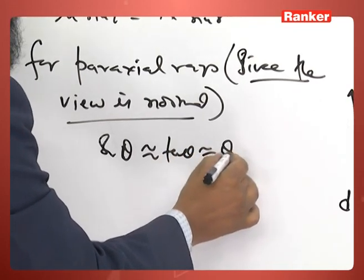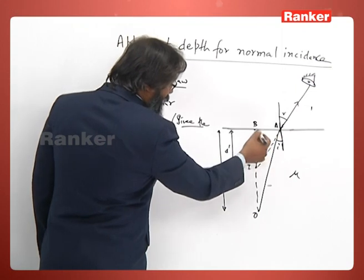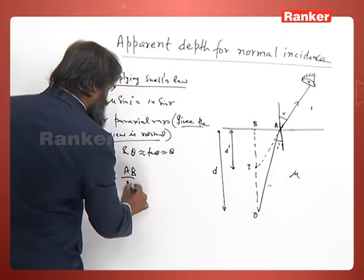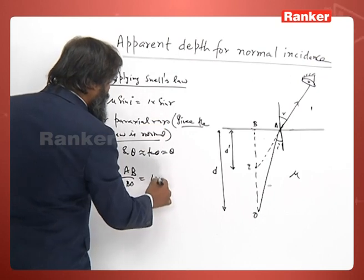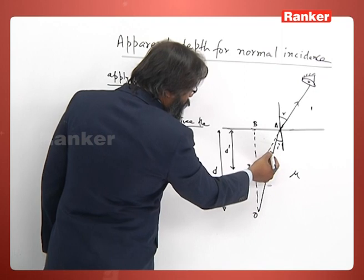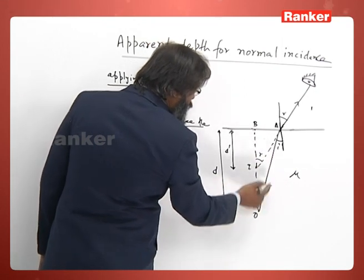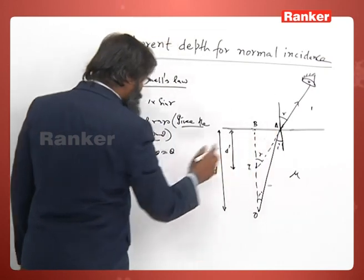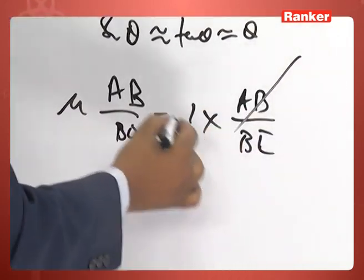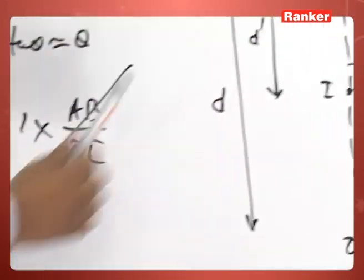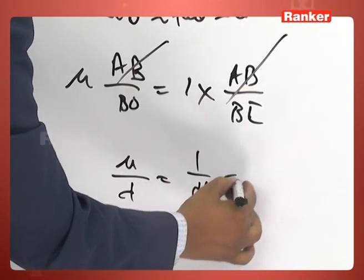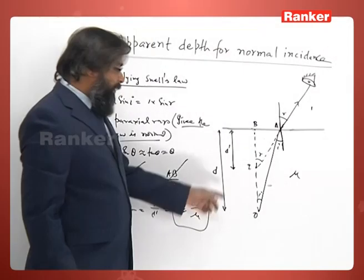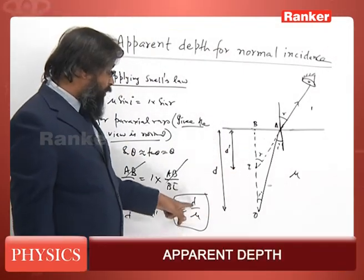For paraxial rays, since the view is normal — perpendicular to the surface — sin(θ) ≈ tan(θ) ≈ θ. So μ·sin(i) means μ·tan(i) = AB/BO, and 1·sin(r) = tan(r) = AB/BI. The AB cancels, giving μ/BO = 1/BI, that is μ/d = 1/d'. Therefore d' = d/μ. The image is formed at distance d/μ from the surface.